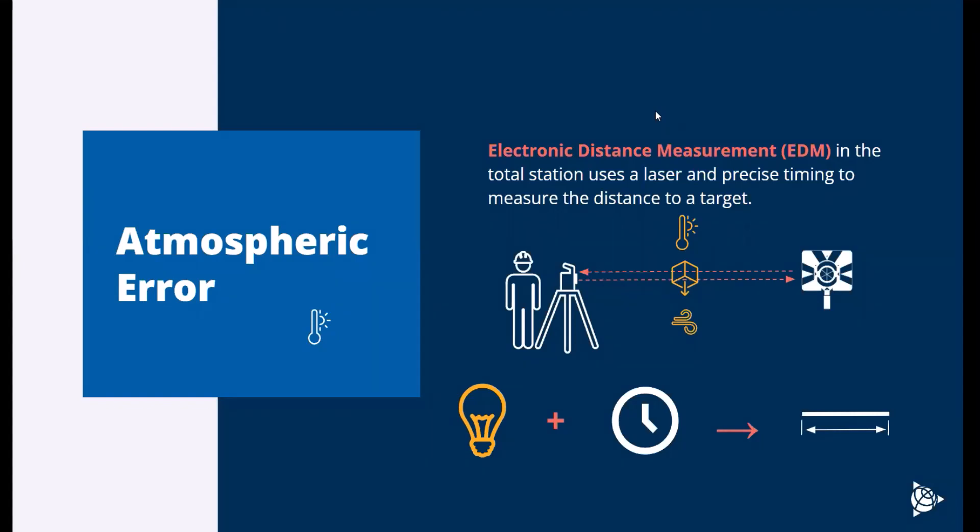Luckily, all the Trimble equipment, whether you're doing semi-automated or automated measurements, will capture the temperature and pressure at the time of measurement. That way the speed of light can be adjusted and a lot of the atmospheric variance can be accounted for. There's also ways with automated systems to introduce humidity sensors. Humidity has a fairly large influence on atmospheric error as well. Taking those weather measurements and humidity measurements and introducing them to the corrections can also help eliminate a source of error.